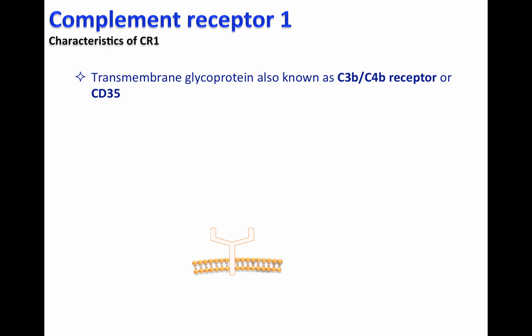CR1 is a transmembrane glycoprotein, also known as C3b-C4b receptor, or CD35.